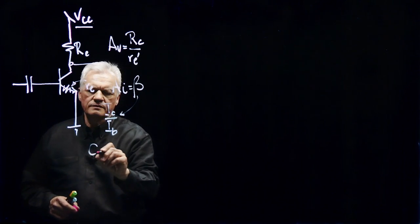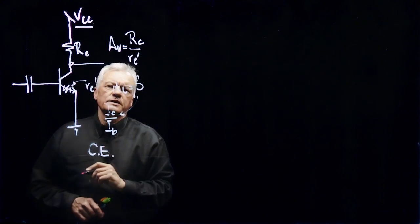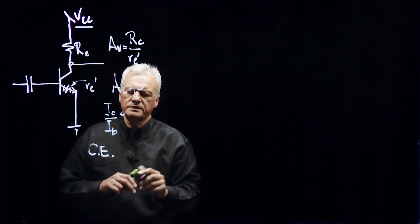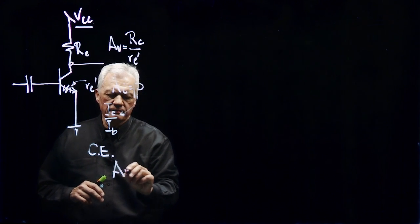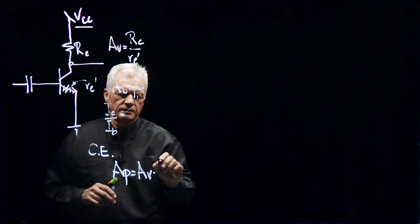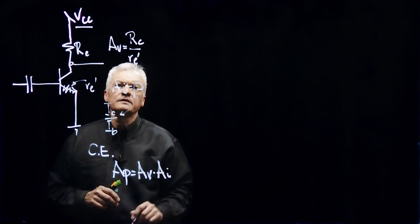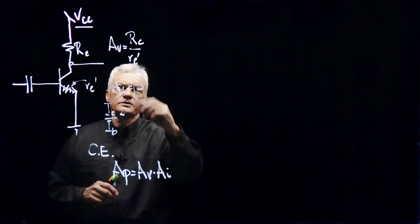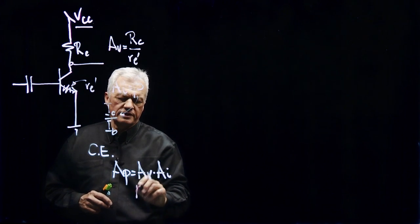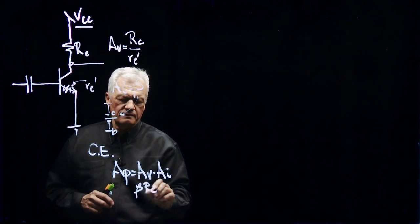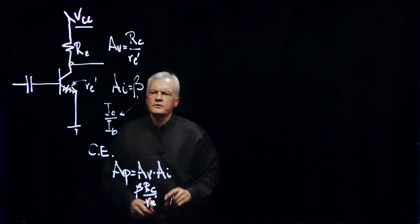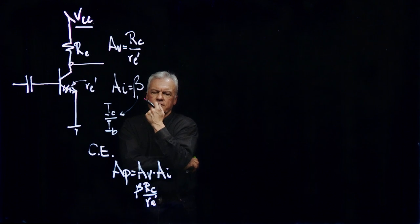We have voltage gain. This is a common emitter transistor configuration, and therefore, because voltage times current is equal to power, our power gain is equal to our voltage gain times our current gain. Substituting in, we can do that quickly. We would have beta RC over Re prime for a power gain.